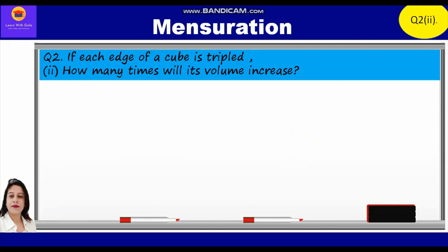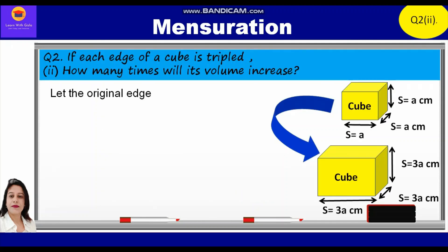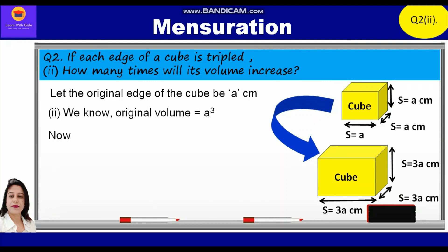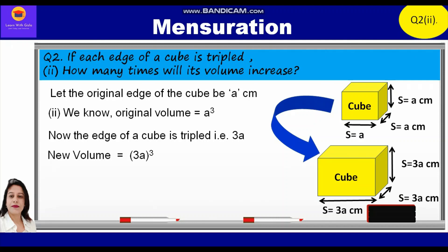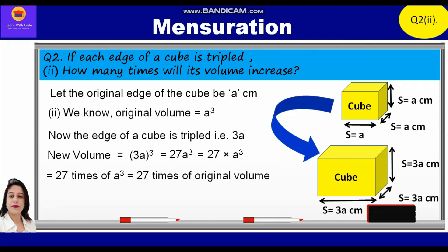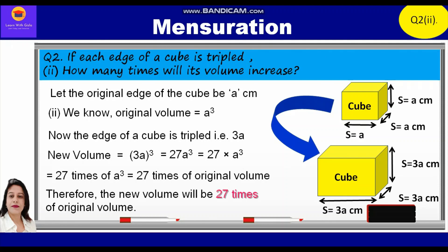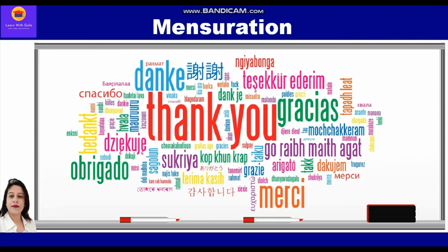Now let's take up the second part. Let the original edge of the cube be 'a' centimeters. We know the original volume is equal to a³. Now the edge of a cube is tripled, that is 3a. So the new volume is equal to (3a)³ = 27a³ = 27 × a³ = 27 times of the original volume. Therefore, the new volume will be 27 times the original volume. Hope you have understood these questions. Thank you everyone.